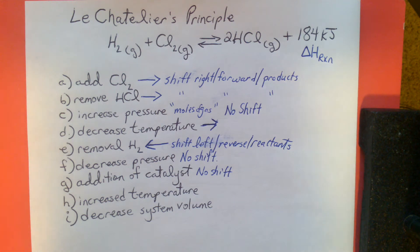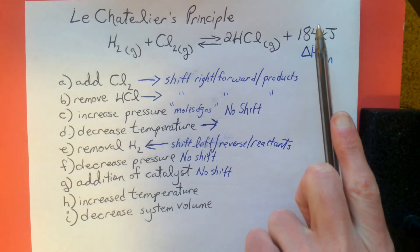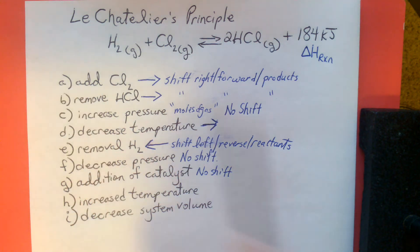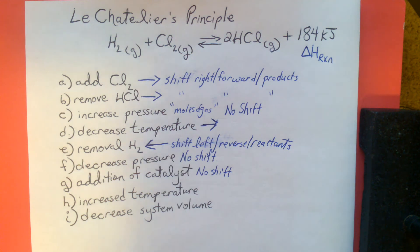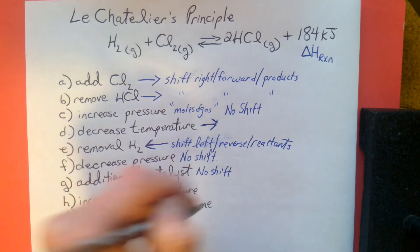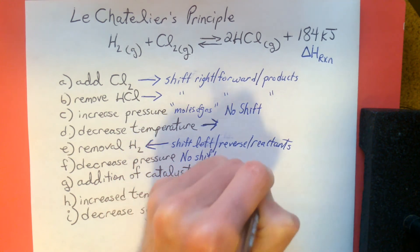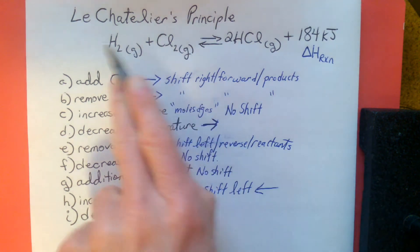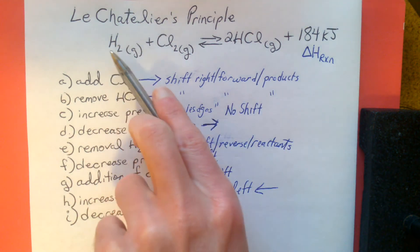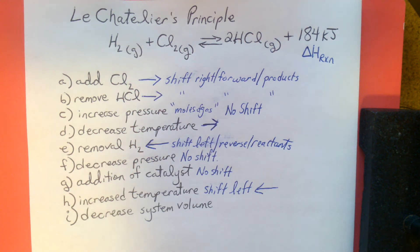Letter H: increase temperature. Let's focus on that 184 kilojoules over here. Increasing temperature is similar to an 'add' for concentration — so we shift away. If we increase the temperature, we shift to the left — to the reverse, to the reactant side. We would shift back to the hydrogen and chlorine gas side.